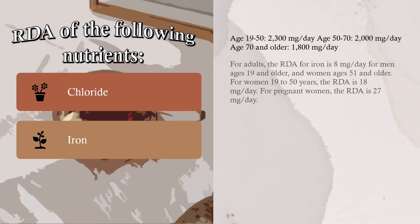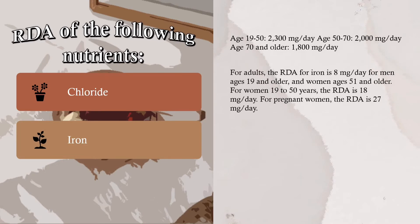Iron: For adults, the RDA for iron is 8 milligrams per day for men ages 51 and older and women ages 51 and older. For women 19 to 50 years, the RDA is 18 milligrams per day. For pregnant women, the RDA is 27 milligrams per day.